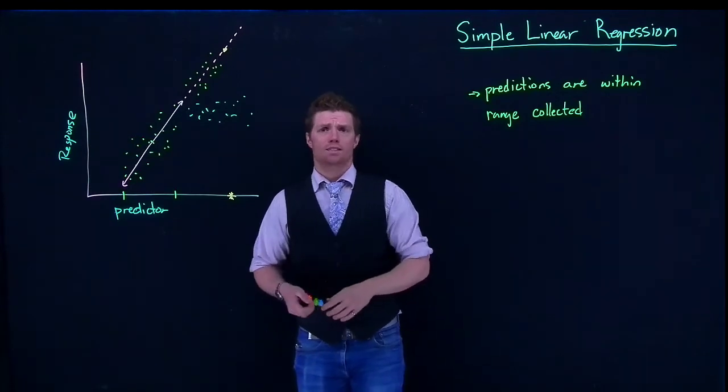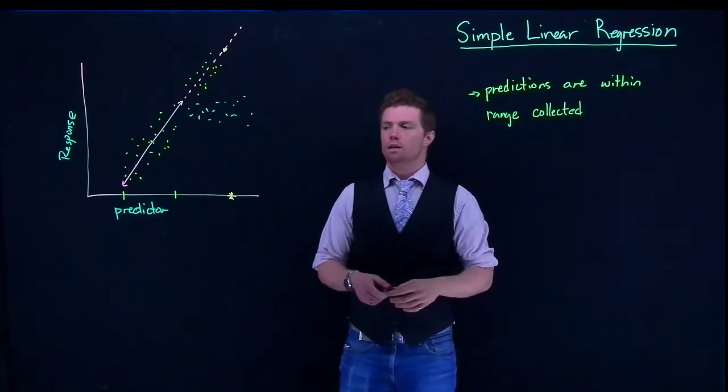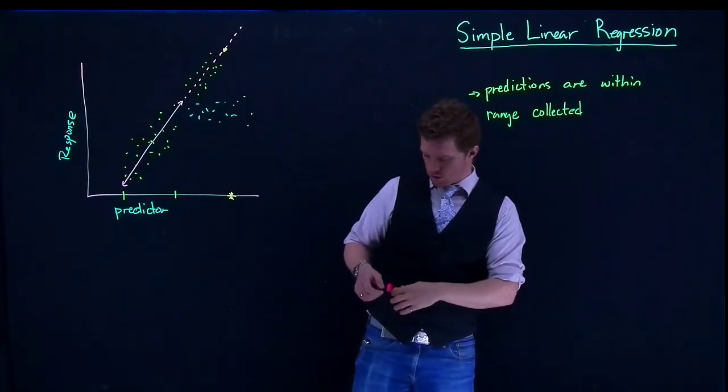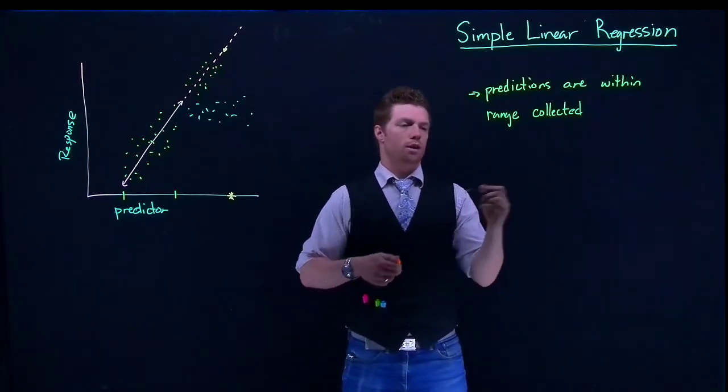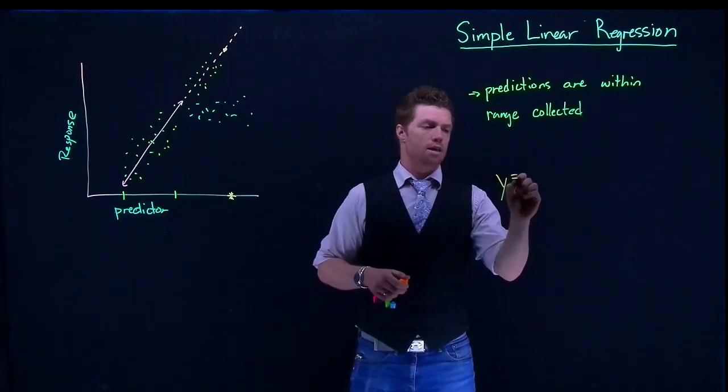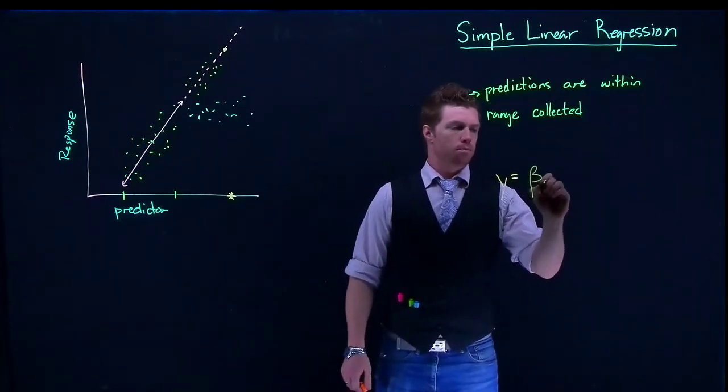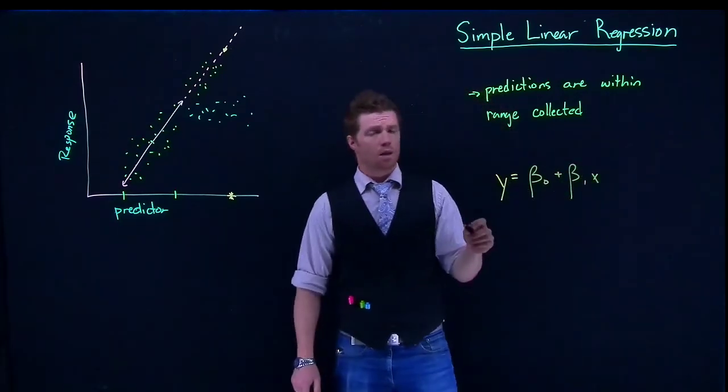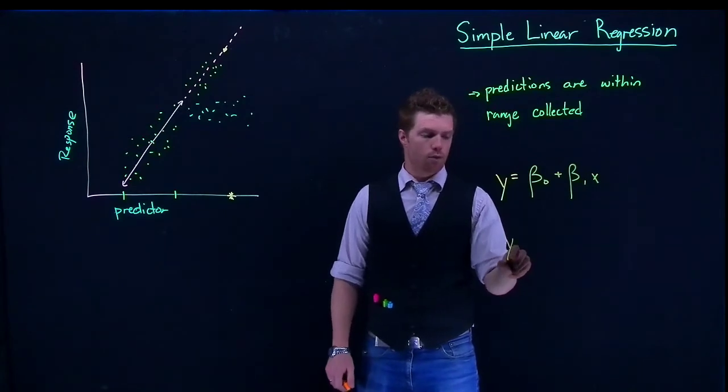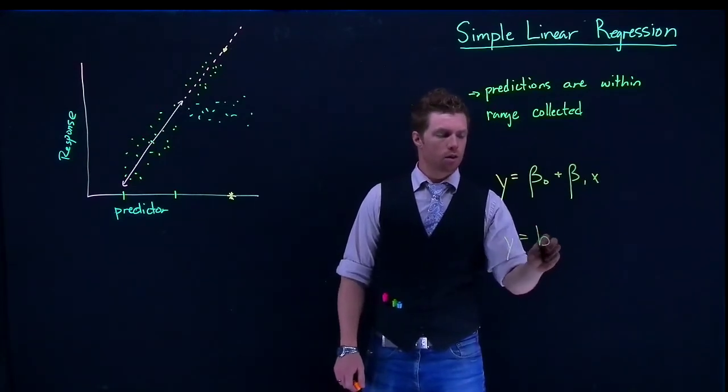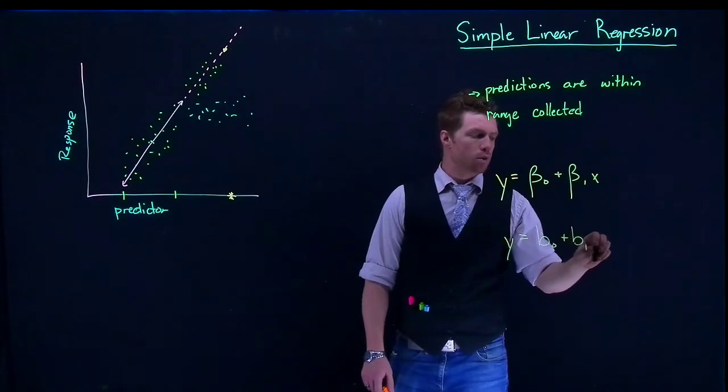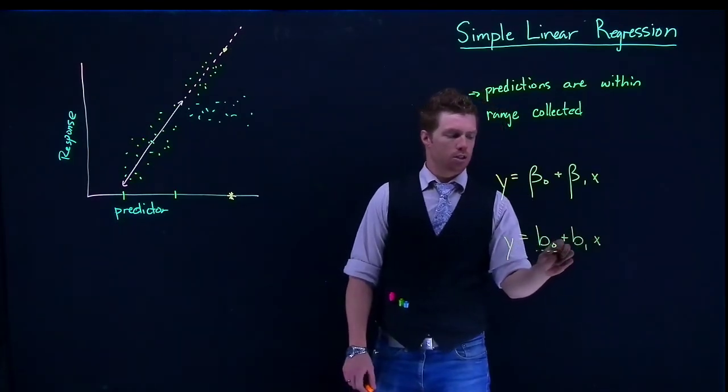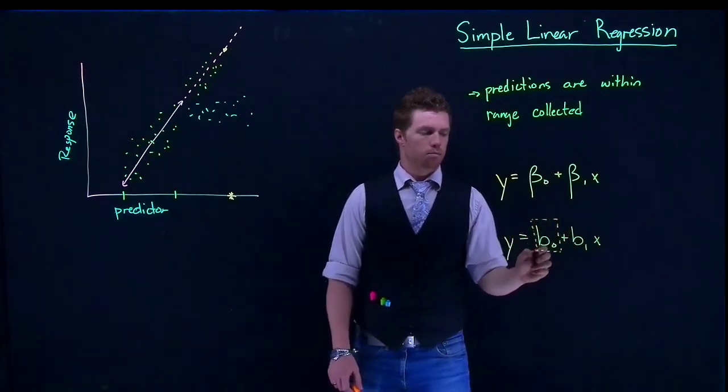This is also why oftentimes when we are doing our regression analysis, when we finally are able to get our equation. So you know, we get our equation that's, you know, this y equals beta naught plus beta 1 x. And when we get it for our estimates, we have b0 plus b1 x. It's oftentimes why the interpretation of beta naught, like a lot of times it's complete nonsense.